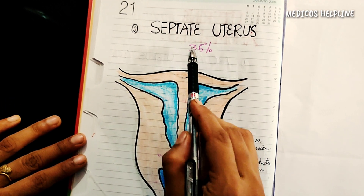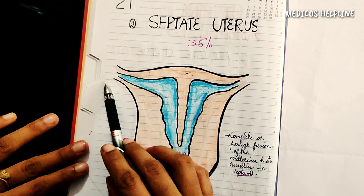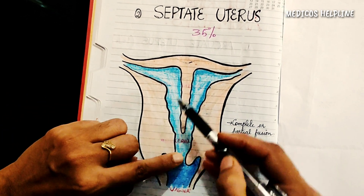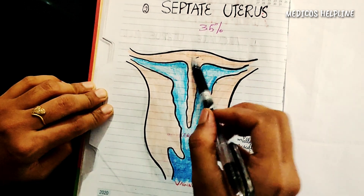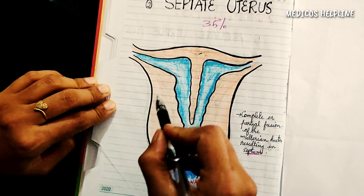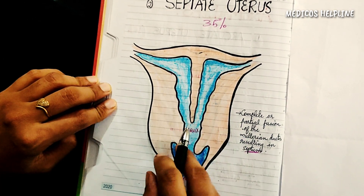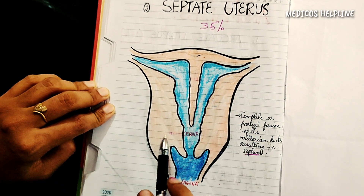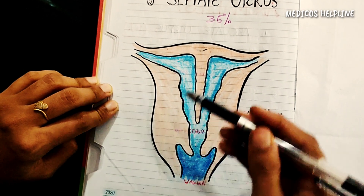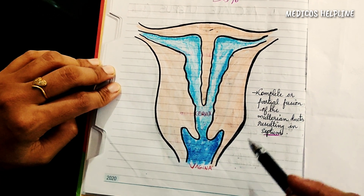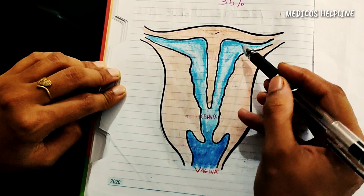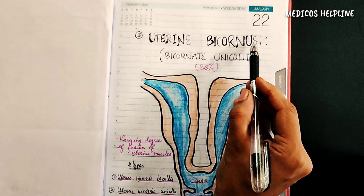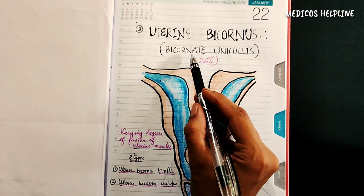The next one is the septate uterus, which forms about 35% of all uterine anomalies. Here there is incomplete fusion of the Müllerian ducts during the embryonic stage, which results in the formation of a septum in the uterine cavity. It can be partial or complete incomplete fusion. Abortions or premature expulsion of fetuses are very common in this case.